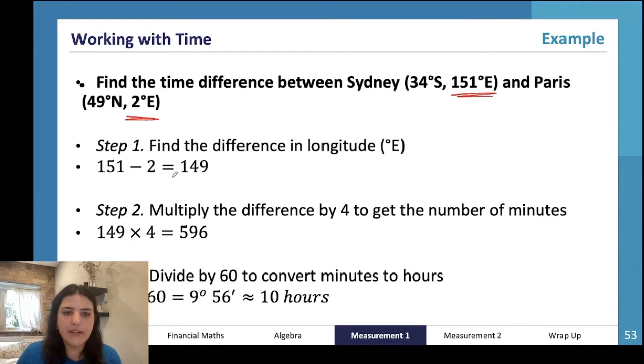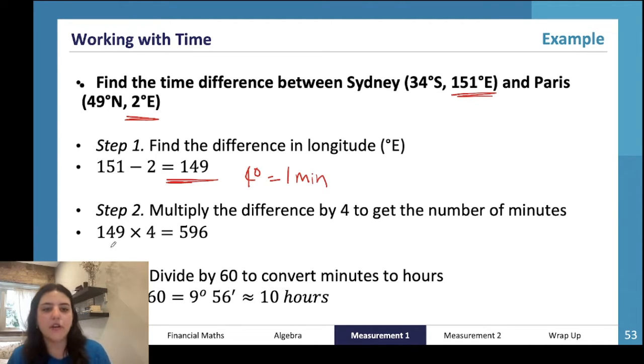The difference is 149. Remember one degree is four minutes, so we're going to times 149 by 4 to get the number of minutes, which is 596 minutes. Then we're going to divide that by 60 to convert minutes to hours. So 596 divided by 60 - you would get like 9 something, and then you click this little bubble button and it goes 9 hours and 56 minutes. That's 10 hours roughly.